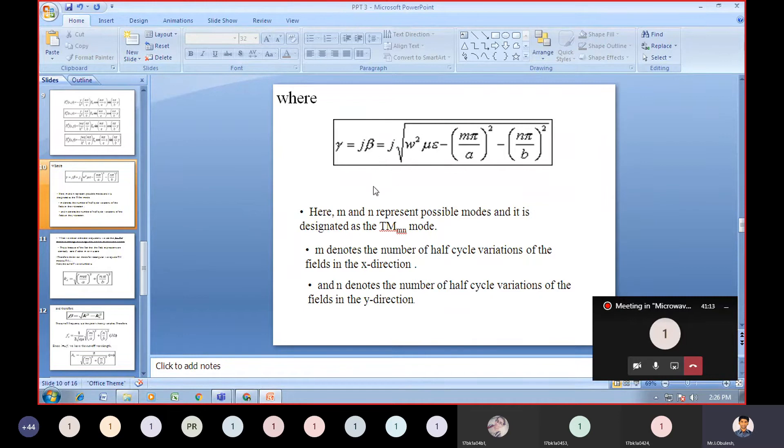Gamma equals jβ equals j times square root of (ω²με minus (mπ/a)² minus (nπ/b)²). Here, m and n represent the possible modes and it's designated as TM_mn mode. M denotes the number of half-cycle variations of the field in the x direction, and n denotes the number of half-cycle variations in the y direction.